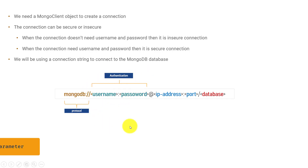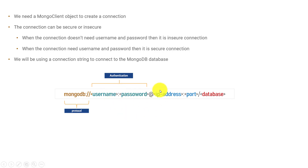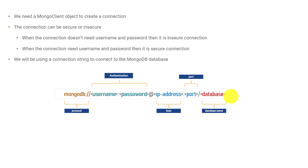If you want to provide authentication to your database, you need to provide your username and password, which are colon-separated, and then they are separated from the IP address and port using an at-sign symbol. So the format is: mongodb://username:password@IP_address:port/database_name. If your MongoDB instance is authenticated and secure, you need to provide this username and password, then the IP address, port, and the database name. There can be other parameters passed to this connection string as well.